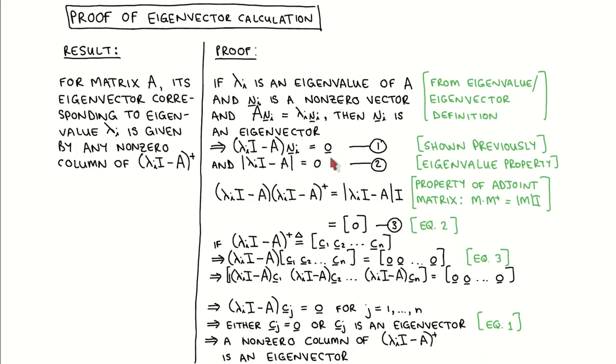But when we compare this equation with the eigenvector equation, we see that they are the same. And we can therefore conclude that if the column vector C is non-zero, it is an eigenvector of A. Putting everything together, we can therefore say that a non-zero column of matrix lambda I times I minus A is an eigenvector of A.